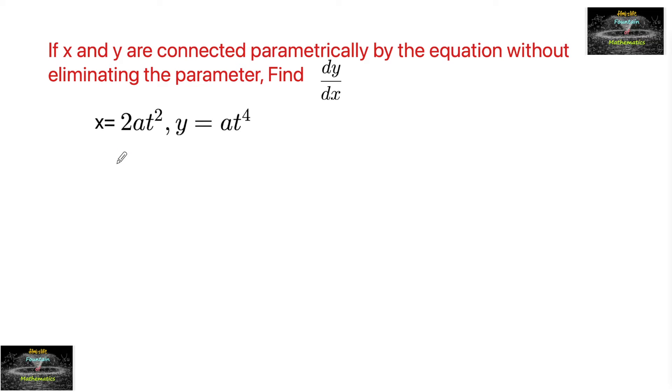So given here, x = 2at² and y = at⁴. Here the t is a parameter. Both the variables x and y are connected with t, so the parameter is t.